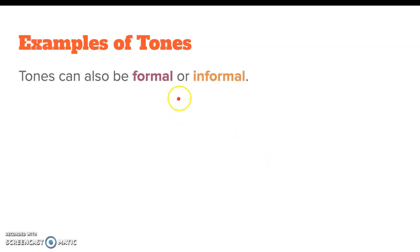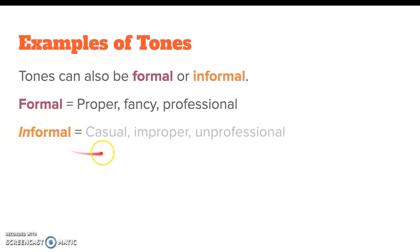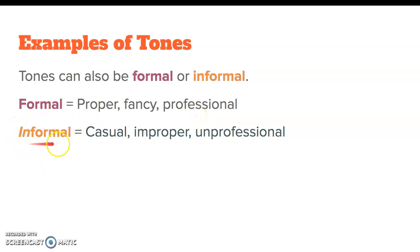Tones can also be formal or informal. Formal is a word that means proper, fancy, and professional. Informal — the prefix in means the opposite — so informal means casual, improper, and unprofessional. I like to think of it like this: imagine you were speaking to the Queen of England — you would speak in a formal tone, proper, fancy, professional. If you're speaking to your best friend, you're speaking in an informal tone — casual, not quite as sophisticated language.